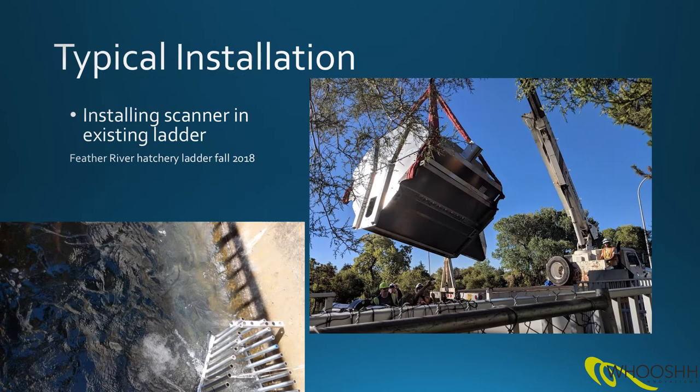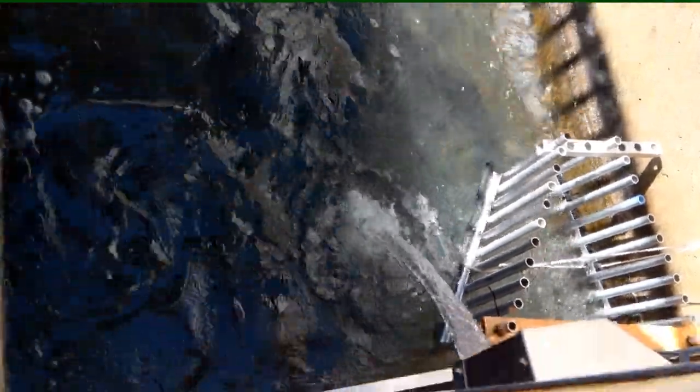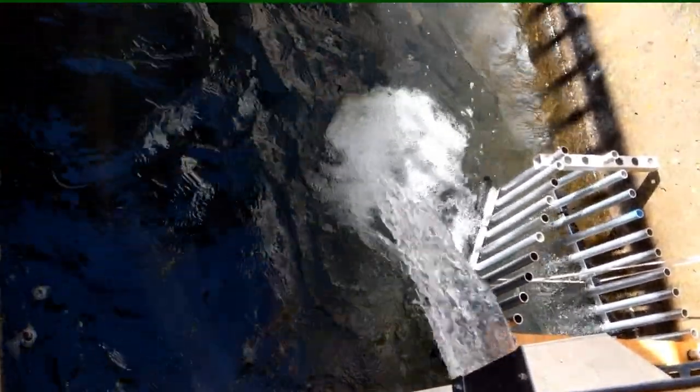This example shows an installation from 2018 where a scanner was mounted in the fish ladder at the Feather River hatchery in Oroville, California. A short steep pass and a false weir were installed in the main ladder running into the hatchery. Fish slid through the scanner and continued up the ladder into the spawning room. This short video shows a couple of fish coming out of the scanner after they have been through and been measured.